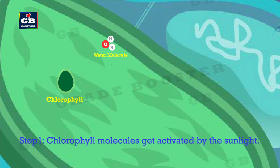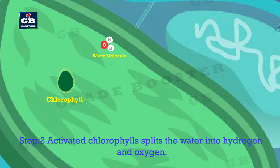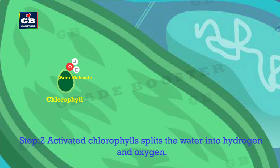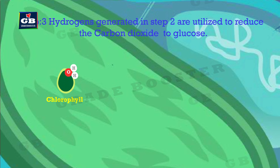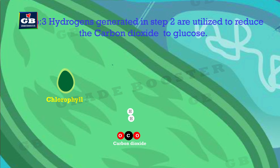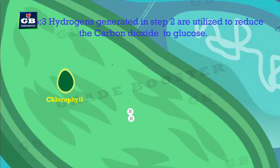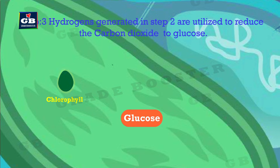Step two: the light-activated chlorophyll splits the water molecule into hydrogen and oxygen. This process is called photolysis. Step three: the hydrogen ions produced in step two help in the reduction of carbon dioxide into glucose — that means carbon dioxide is converted to glucose.